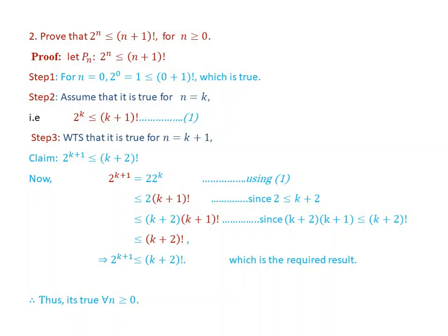Step 1: Using the Principle of Mathematical Induction, check it is true for n equal to 0. For n equal to 0, 2 to the power of 0 equals 1, and (0+1) factorial equals 1 factorial equals 1, which is true.